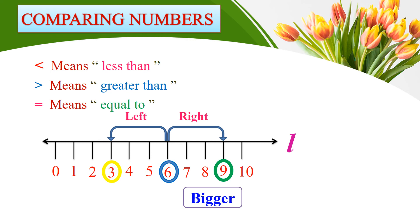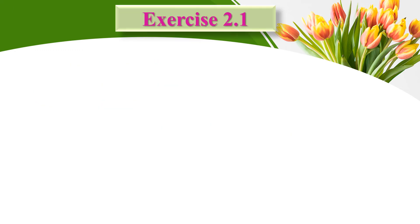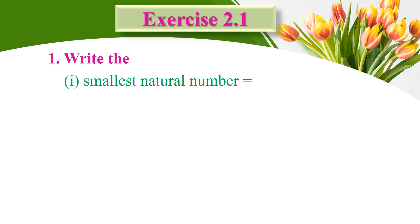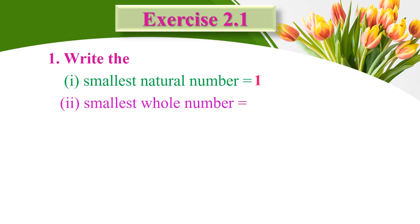Exercise 2.1: Write the smallest natural number — that is one. Write the smallest whole number — whole numbers start with zero, so that is zero.